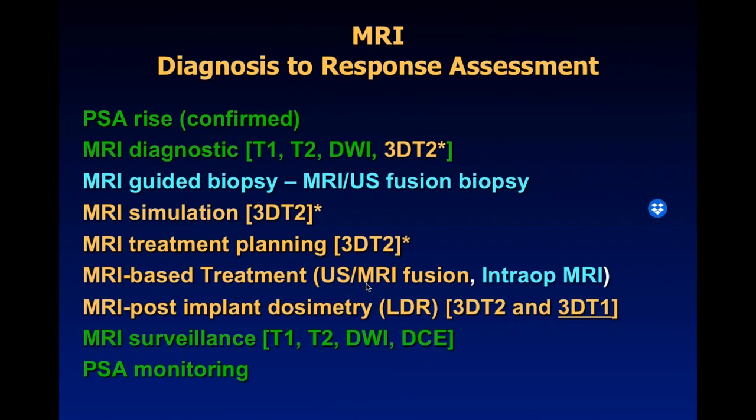These are the MRI sequences utilized today for diagnosis, simulation, treatment planning, and post-implant assessment. Green sequences are for the diagnostic radiologist side. Yellow-to-orange sequences are for radiation planning. Light blue sequences are what urologists use for MRI-guided biopsies.